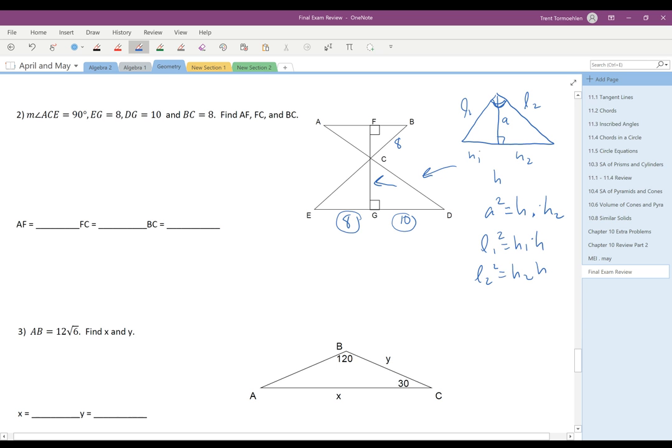and L2 squared equals H2 times H, right? This times the whole thing equals L1 squared. Same thing on that one. And then the fourth one we had is we used the area, right? L1 times L2 equals A times H. Two different ways to calculate the area of the triangles.